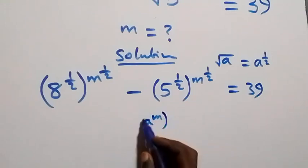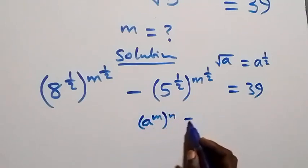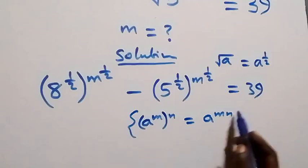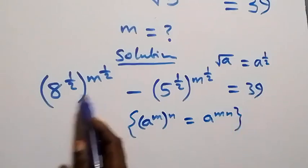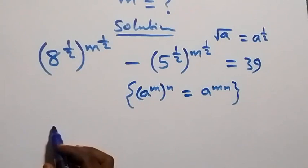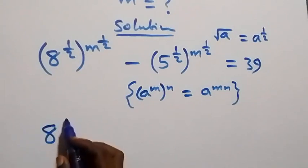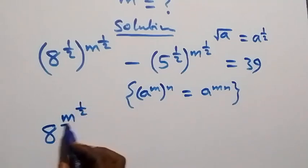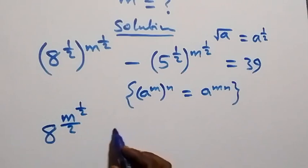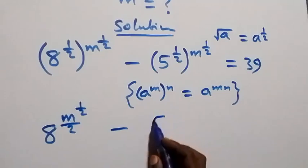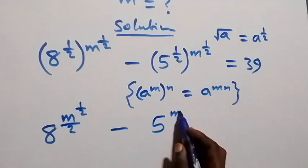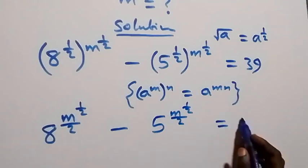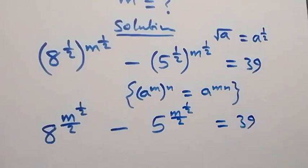From the law of indices, a raised to power m raised to power n is the same thing as a raised to power m times n. So this power multiplies, and it becomes 8 raised to power m raised to power half over 2, then minus 5 raised to power m raised to power half over 2, which equals 39.